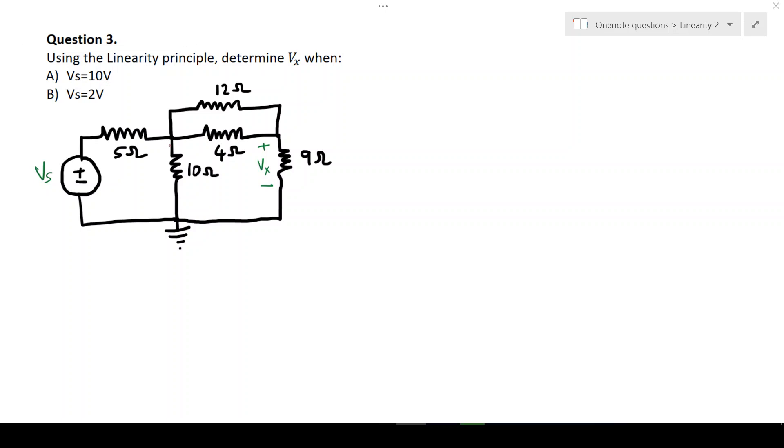In this problem we will be looking at the application of linearity in determining an output voltage Vx. So the question reads as follows: Use the linearity principle to determine Vx when A, Vs is 10 volts and B, Vs is 2 volts.